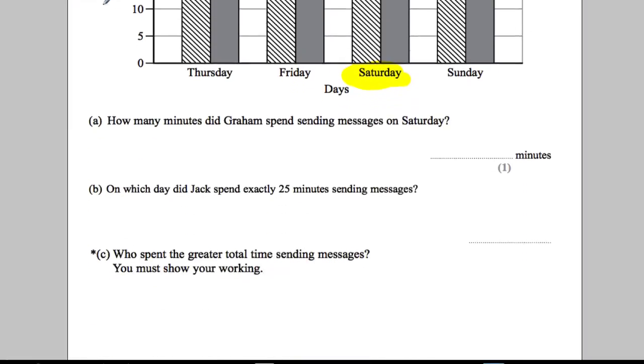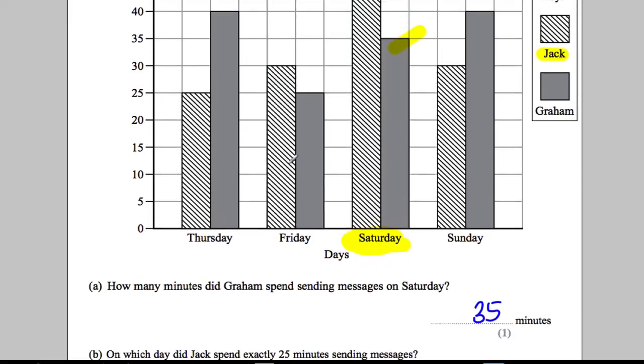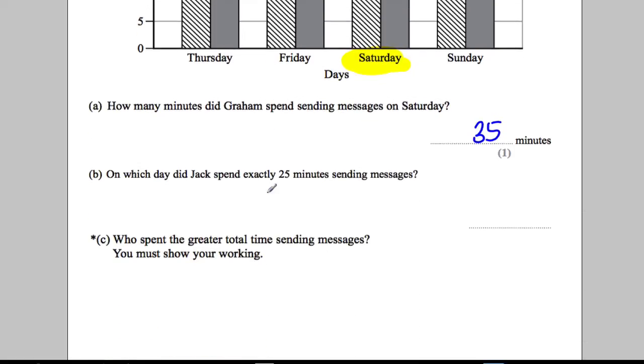On which day did Jack spend exactly 25 minutes sending text messages? Jack is this one, so which one is 25? 25 is here, so you just read across. It's clearly Thursday. Be careful here to read the question - it's on which day, so make sure your answer is a day. It's Thursday.